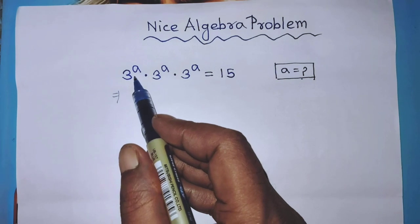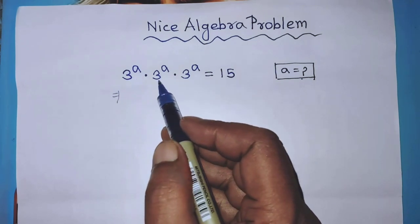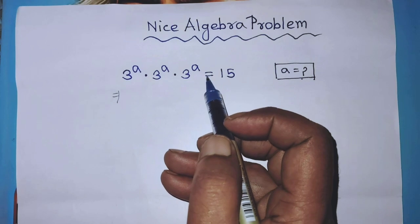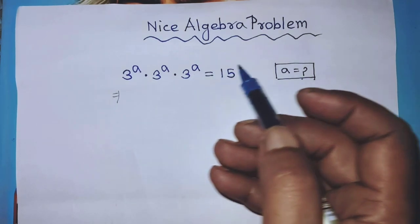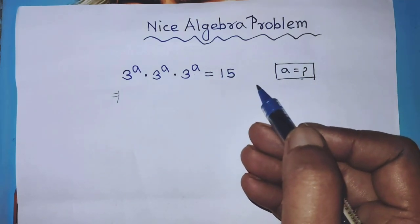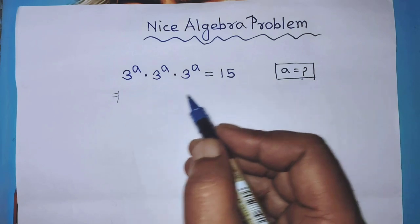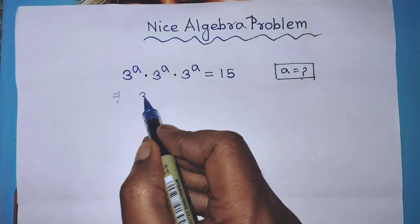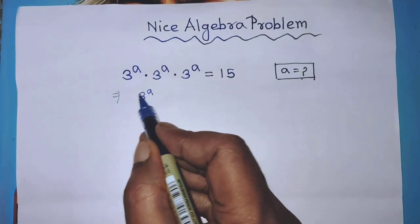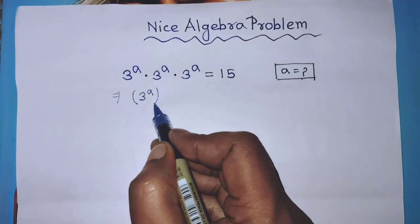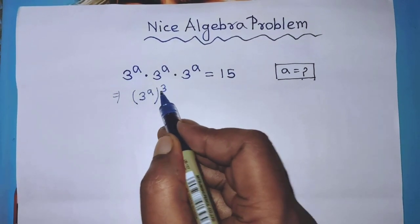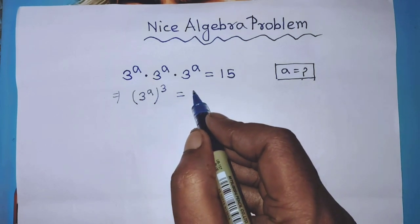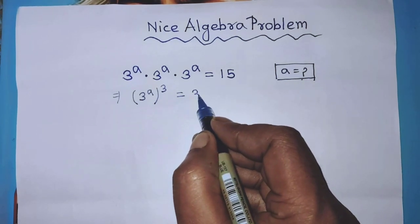In this equation, on the left hand side we have 3 to the power a times 3 to the power a times 3 to the power a. In the first step of the solution we can write from the left hand side: 3 to the power a, whole to the power 3, is equal to 3 times 5.